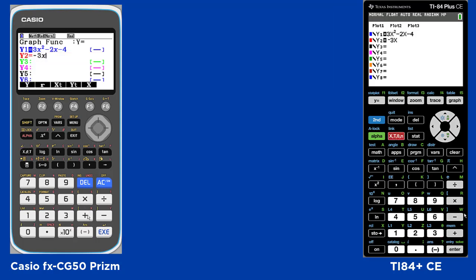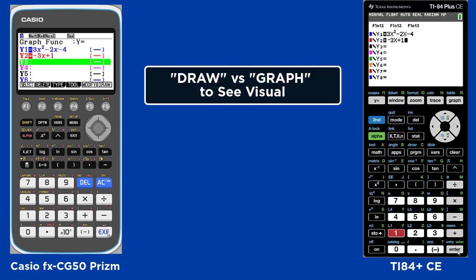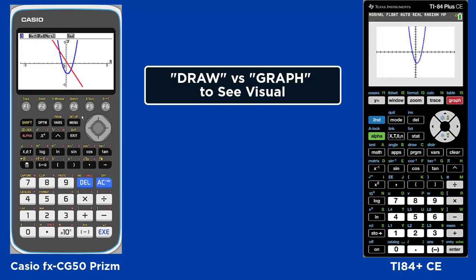Another difference is where you graph. On the Casio, you will choose F6 to draw, and on the TI, graph. They are both in the top right corner.